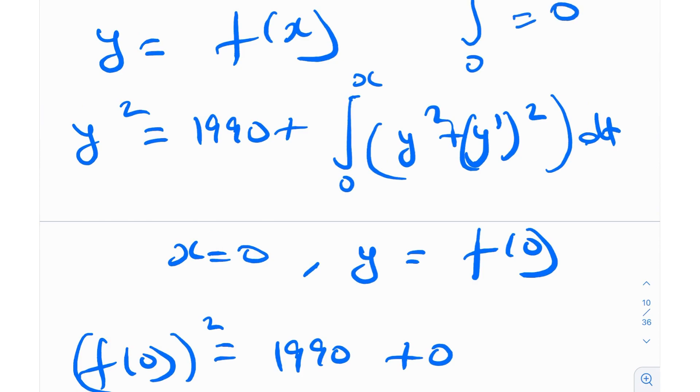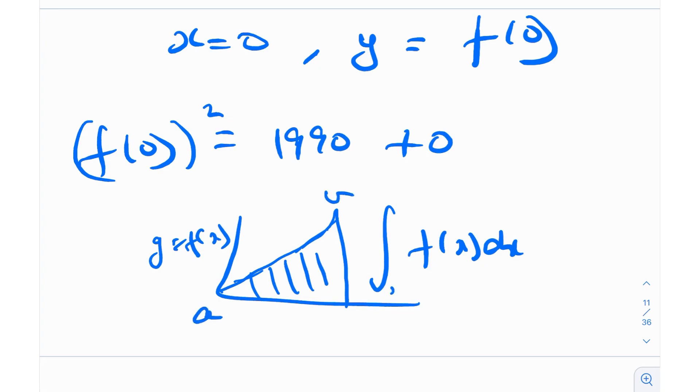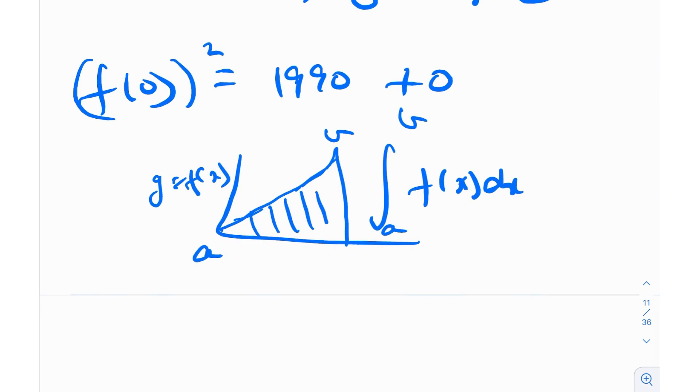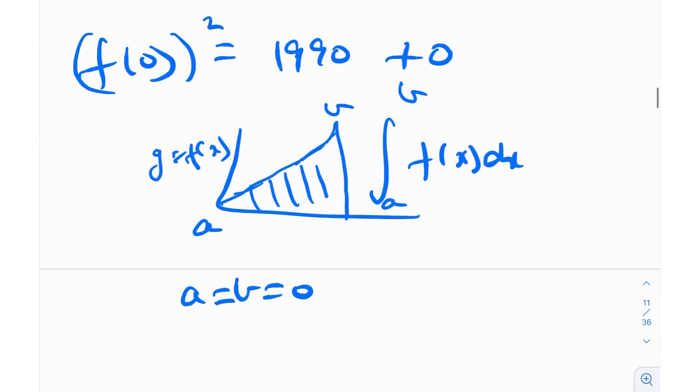Because the integral from 0 to 0 of anything will always be 0, because integration is nothing but the area. For example, if I want to find the area of this entire curve, I'll have to find it as an integral of f(x)dx. If this function equals f(x) and we want to find the integral from a to b, this will be the area under this particular curve. That's a rough idea of what integration is. But keep in mind that whenever the limits are from 0 to 0, obviously the area would be 0.